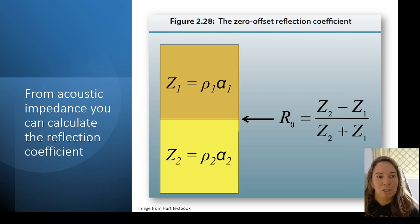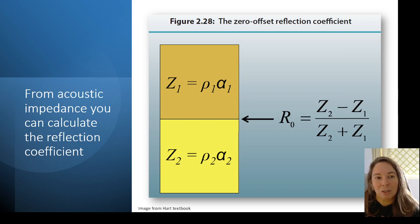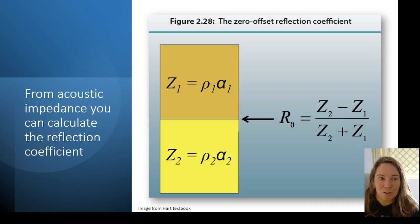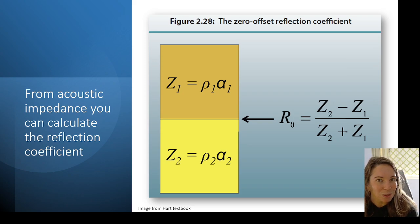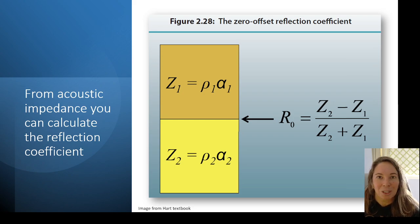Just as a reminder from our acoustic impedance, we get the reflection coefficient, which is the difference over the sum of the acoustic impedance of the two layers. So if we have a larger difference in the rocks, like from a hard shale to a soft sand filled with gas, we'll get a larger reflection that we can look for in the seismic data.